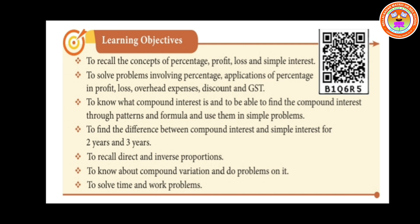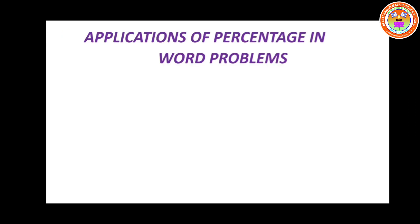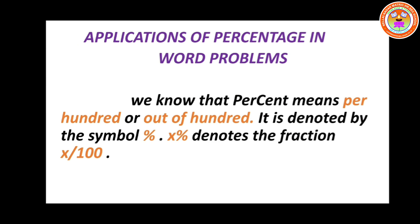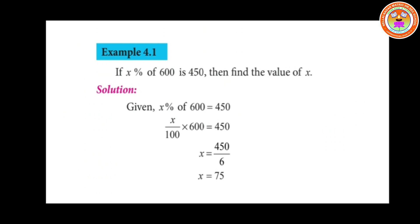The first topic is based on percentage — applications of percentage in word problems. Percent means per hundred, or out of hundred. It is denoted by the percentage symbol. For example, x percentage denotes the fraction x divided by 100. So 3% means it denotes 3 divided by 100. Now let us move on to some examples based on percentage.